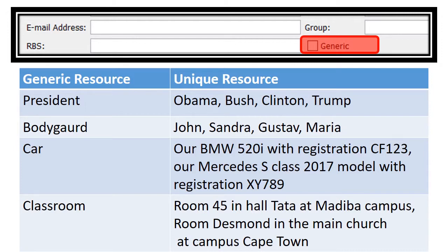Another example: a generic type would be 'bodyguard,' and then the unique version is Sandra — their specific name makes them unique. Similarly, a generic resource could be 'a car,' while unique would be a specific BMW 520i with a particular registration number, or a specific 2017 Mercedes with its registration number.